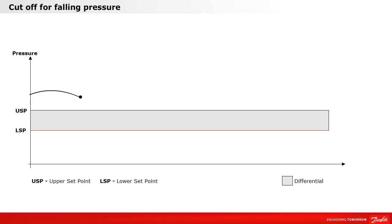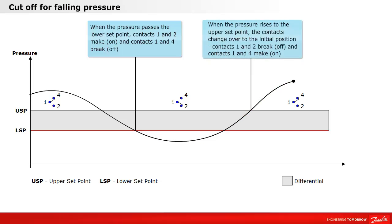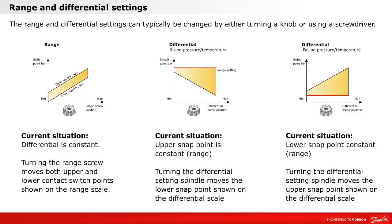Let's take a look at the cutoff for falling pressure. The range and differential settings can typically be changed by either turning a knob or using a screwdriver.